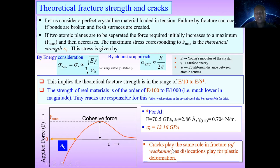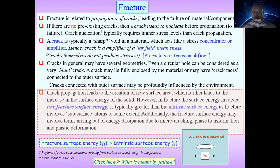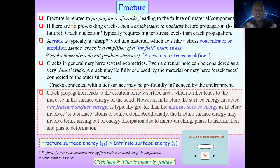Cracks play the same role in fracture weakening as dislocations play in plastic deformation. Fracture is related to propagation of cracks. When a crack propagates, it leads to fracture and failure of the material or component. If there are no pre-existing cracks, the crack needs to nucleate before propagation. Crack nucleation typically requires higher stress levels than crack propagation, because once damage initiates, propagation needs less energy.